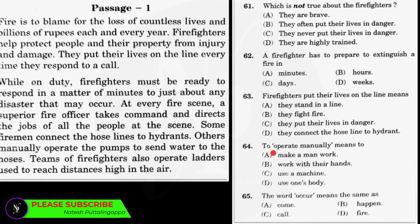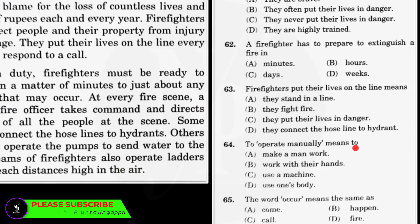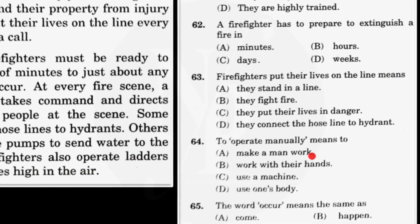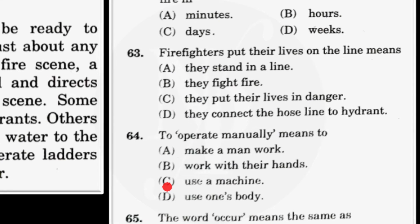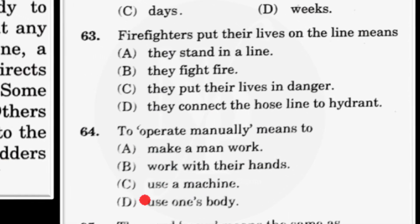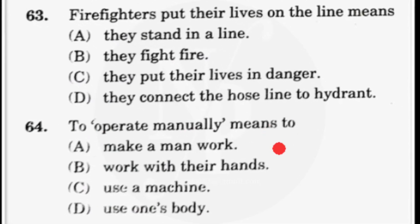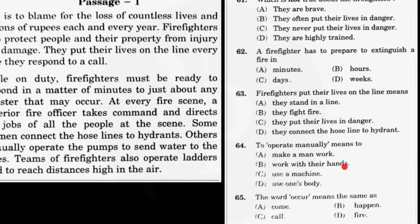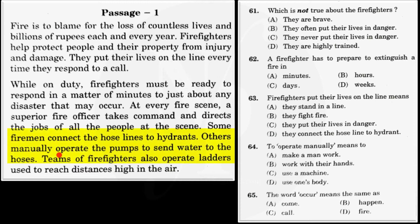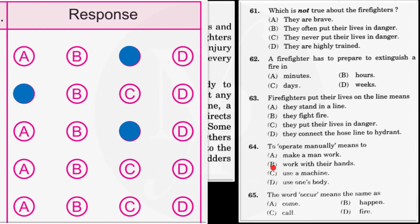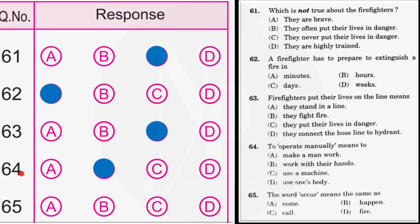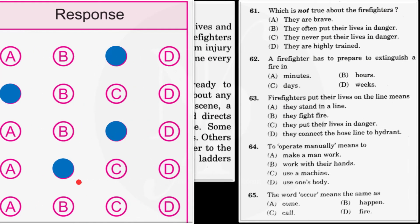Moving on to question number 64: to operate manually means? A: make a man work. B: work with their hands. C: use a machine. D: use one's body. In the passage it is given that others manually operate the pumps to send water to the hoses. So the phrase 'operate manually' means to work with their hands. We mark answer option B as the correct answer for question number 64 on the OMR answer sheet.